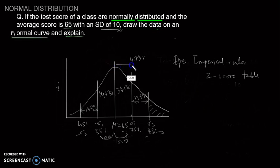From here to here is 34.13%, from here to here is 13.59%. The total is 47.73%. The rest, from here to here, is 2.27%. So 2.27% of students scored above 85%.